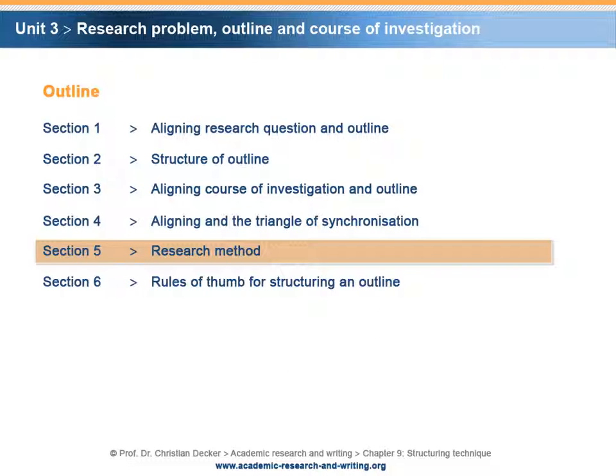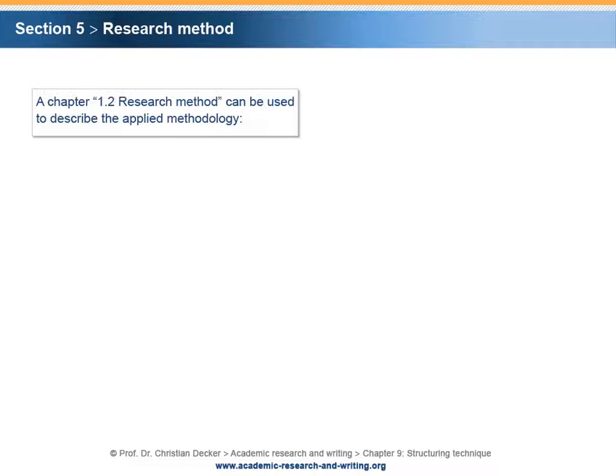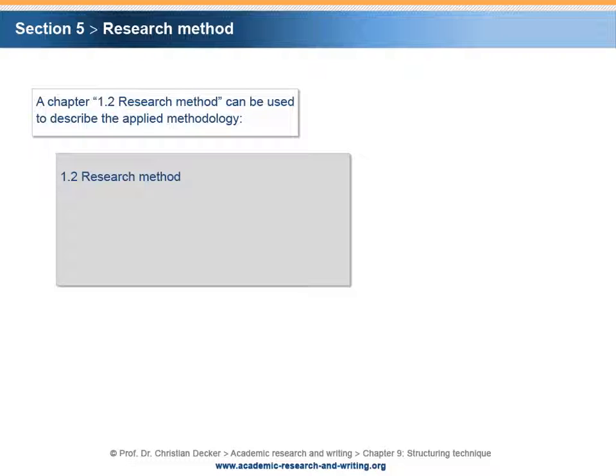Section 5 – Research Method. The subchapter research method is used in order to describe the applied methodology of the research project. The subchapter research method is not identical with the subchapter course of investigation. In contrast to the subchapter course of investigation, in which the route of the research is described, the subchapter research method is the place where the theoretical framework as well as the techniques and applied procedures are defined.